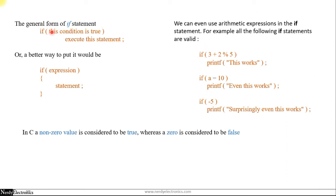The general form of the if statement is: if this condition is true, execute this statement — or better, if an expression is true, all the statements will be executed; if the expression is false, the statement will be skipped. The if statement also works for arithmetic expressions. For example, 3 plus 2 modulo 5 is a non-zero value. In C, 0 is considered false and any non-zero value is considered true. Similarly, 'a equals 10' is an assignment — we assign 10 to a — and since execution succeeds, it returns true. Even if the condition is minus 5, it will get executed because it is non-zero.